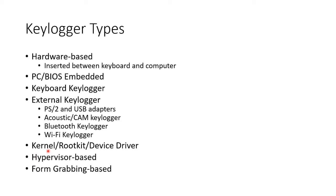You could put in a rootkit, which basically replaces some of the core parts of the kernel of the operating system. Or maybe replace a device driver that has a keylogger. You could have a keylogger that goes into the hypervisor if you're using virtual machines, or something that captures data off of forms that a user enters. There are so many keyloggers — these are just a few examples.